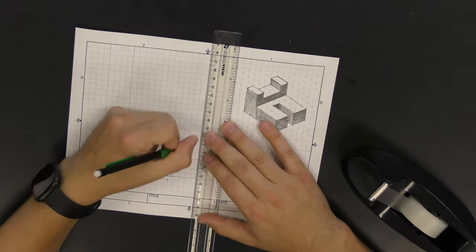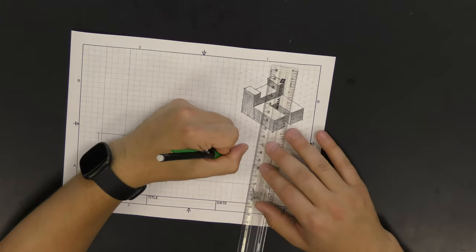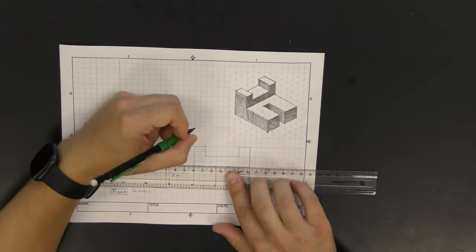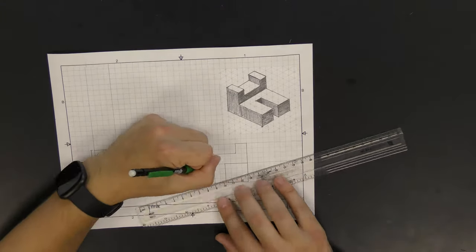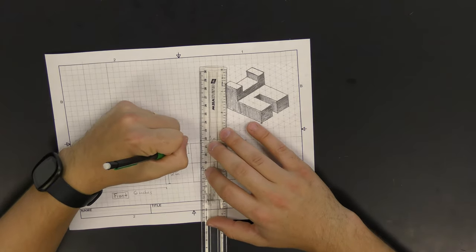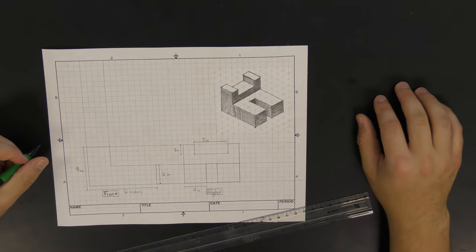Next we're going to begin working on the right side sketch of our object. It's helpful to look at the isometric sketch and imagine what that surface would look like if it was completely flat. And that's exactly what we're going to put on our sketch. Once we finish sketching that side, we'll add our dimensions, and then we'll add a right side label under our sketch, just like we did with the front view.